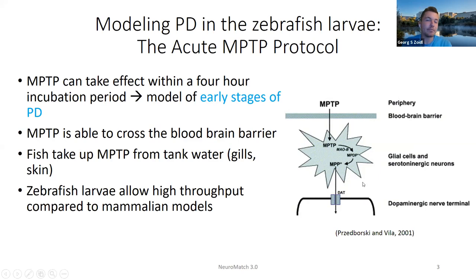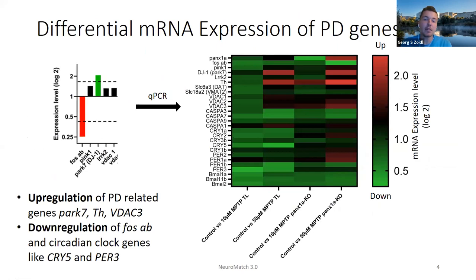Here I have my real-time PCR data converted into a heat map. What we found after MPTP treatment is that there was a clear up-regulation of Parkinson's disease-related genes such as PARK7, tyrosine hydroxylase, and VDAC3. We also found a down-regulation of genes such as FOSAB and circadian clock genes like CRY5 and PER3.